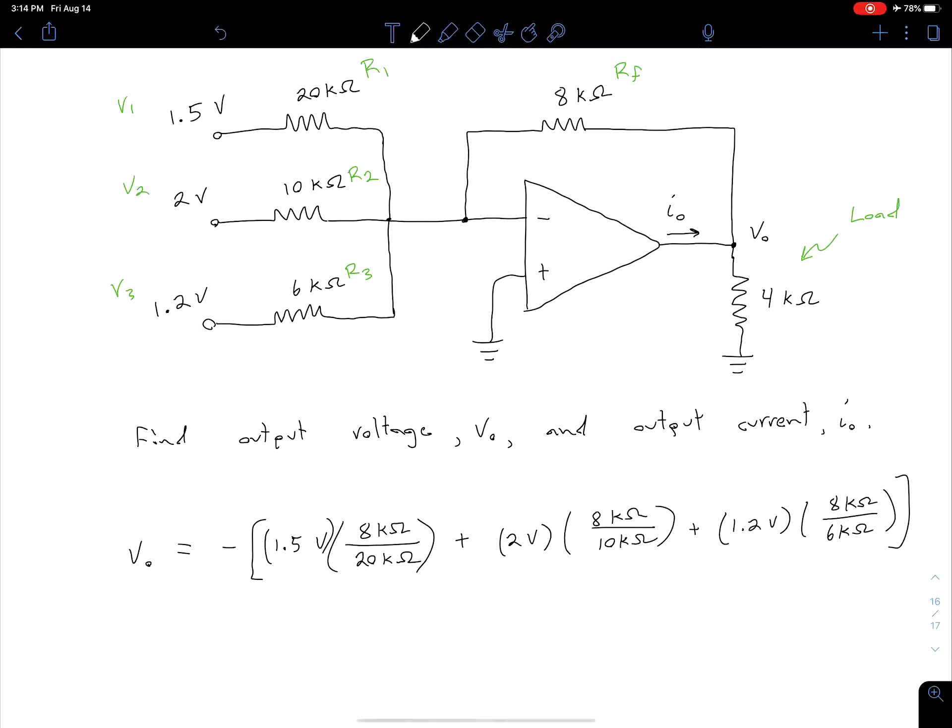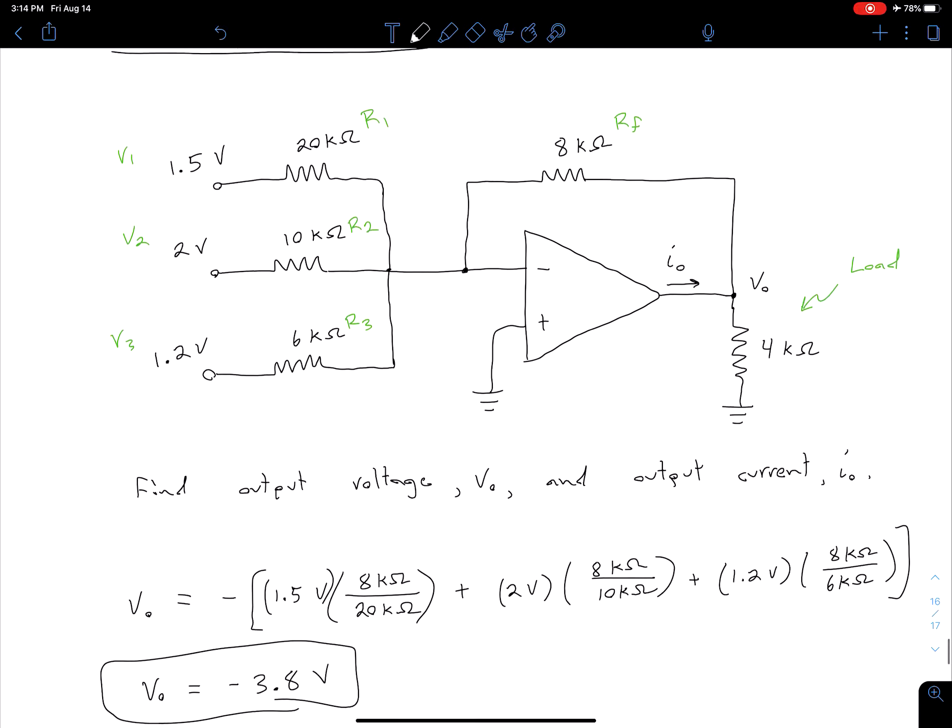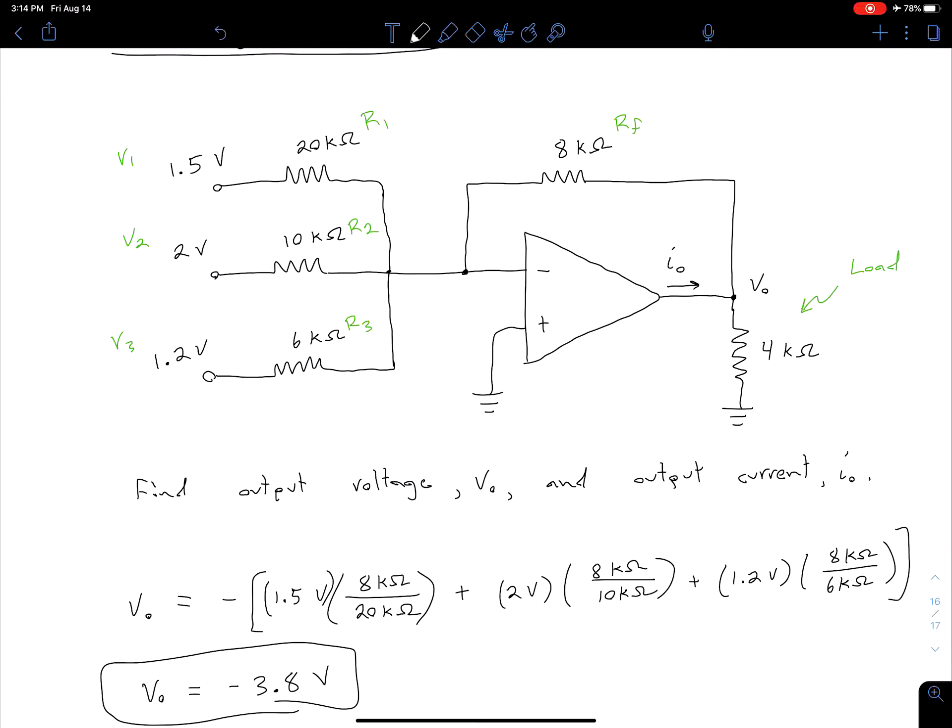I put some parentheses here just so everything's the same. It's as simple as just plugging that into our calculator. If we plug that in, we get that our V_out is -3.8 volts. This -3.8 is because, of course, it's inverting, so we had all positive inputs, so we would expect the output to be negative. And then it's just taking different weights depending on those R1, R2, and R3 values.